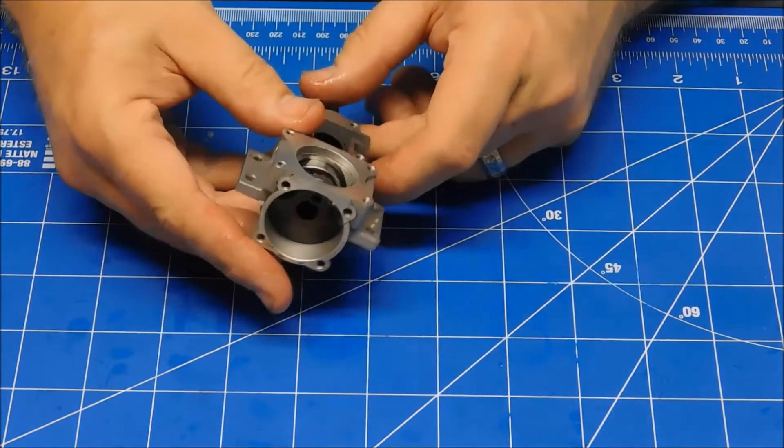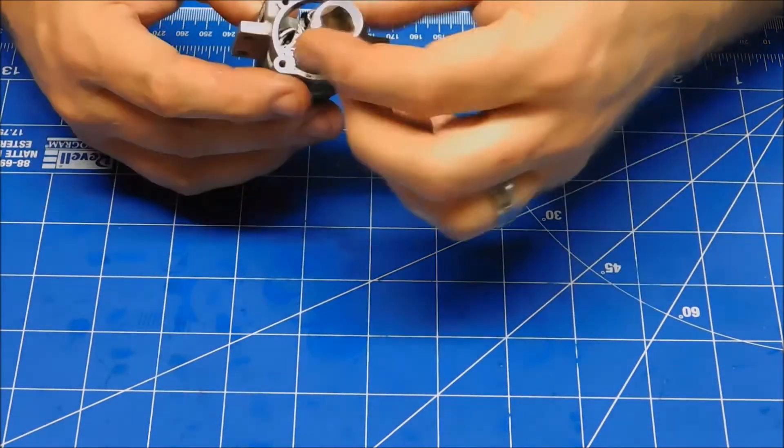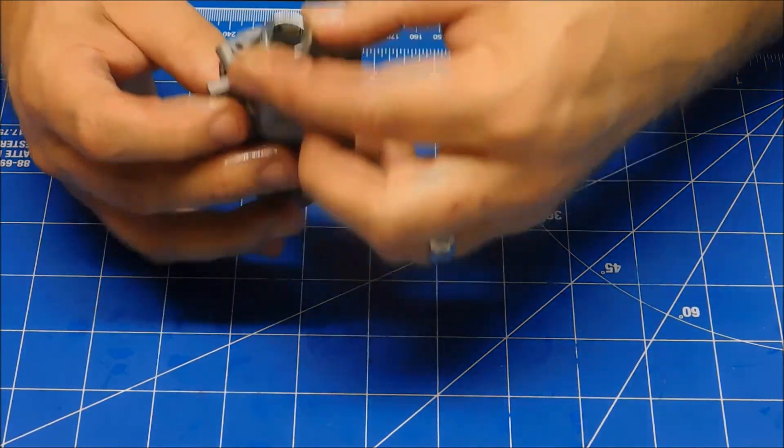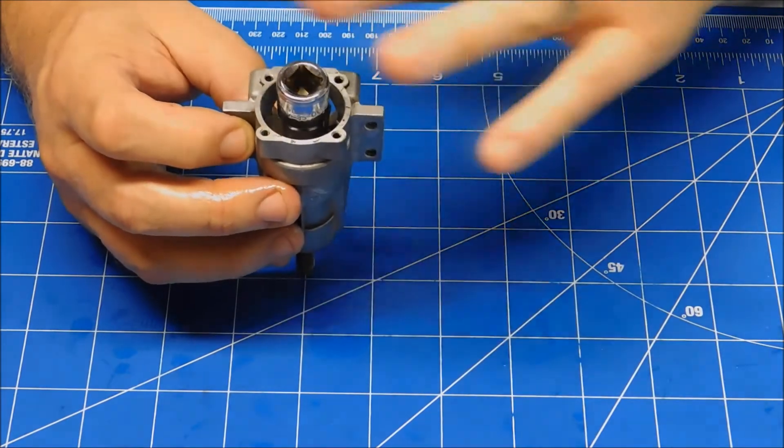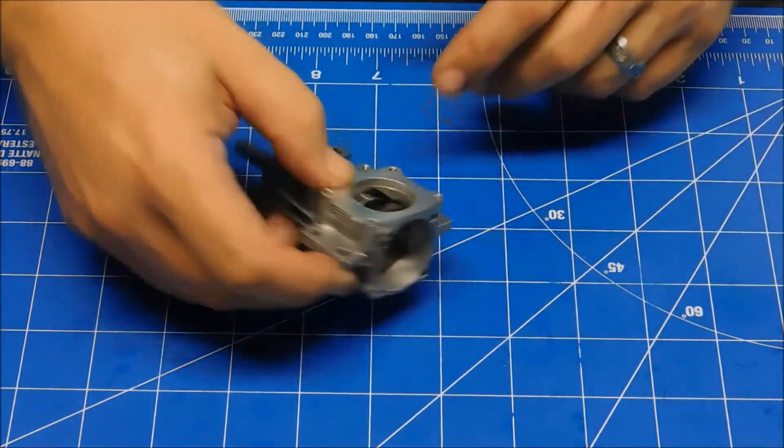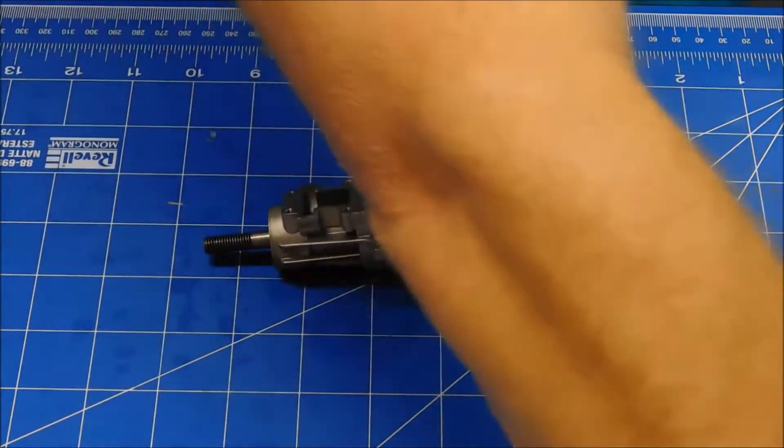And what I'm going to do now is I have a small socket. I'm going to place this. I'm going to fixture it in my arbor press. I'm just going to use that socket as my drive to push this down into place. So let me get that jigged up real quick here.